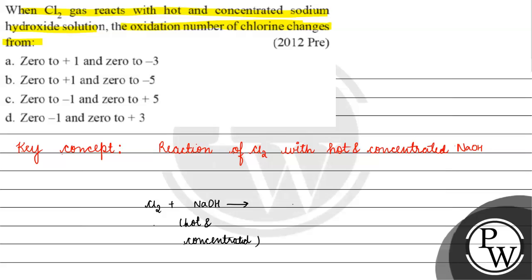formation होगा किसका? हमारे पास formation होगा NaCl का, NaClO₃ का, और 3 moles of water का। Right, हमारे पास basically formation होगा 3 moles of water का, NaClO₃ का, और 5 NaCl का।